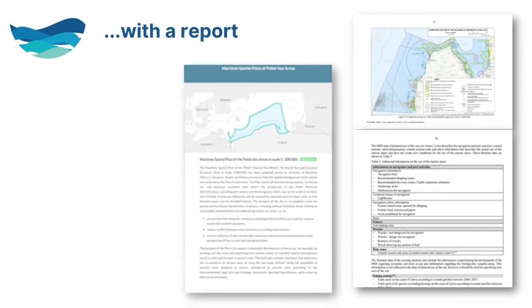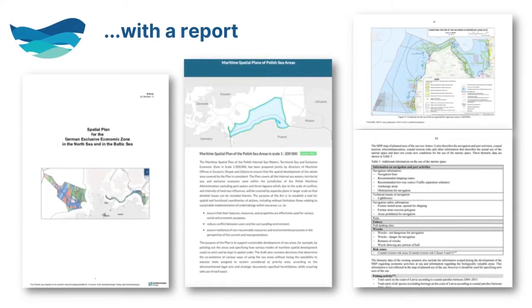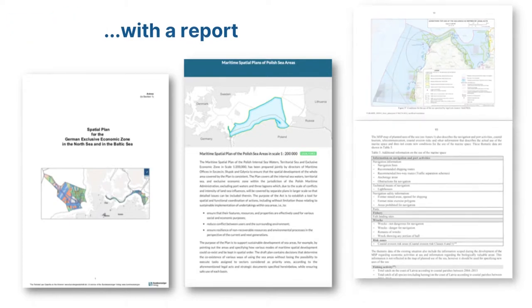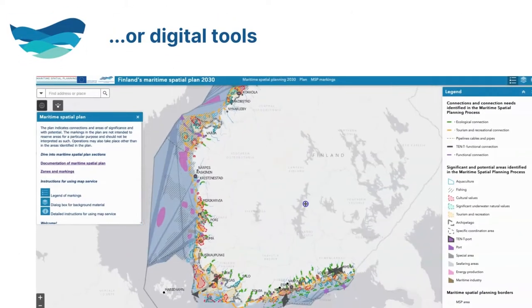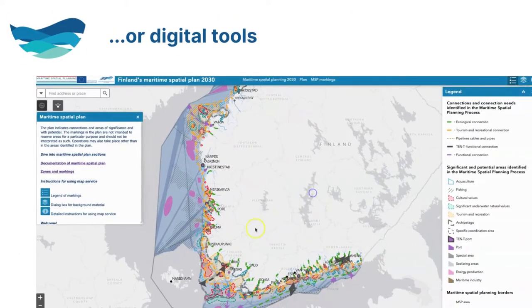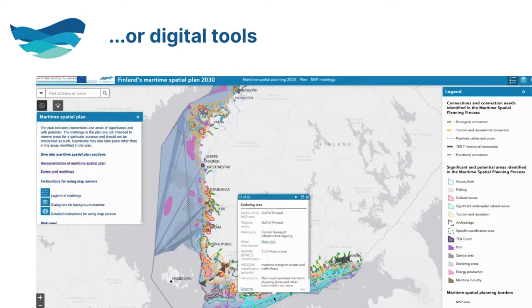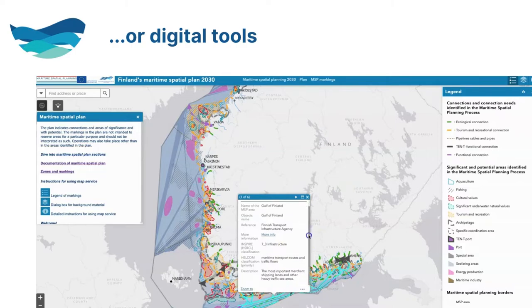These plans are normally accompanied by a report showing the conditions under which such activities can be placed. Nowadays, this is often supported by digital tools. For example, Denmark and Finland have developed interactive online tools with detailed explanations of MSP designations.